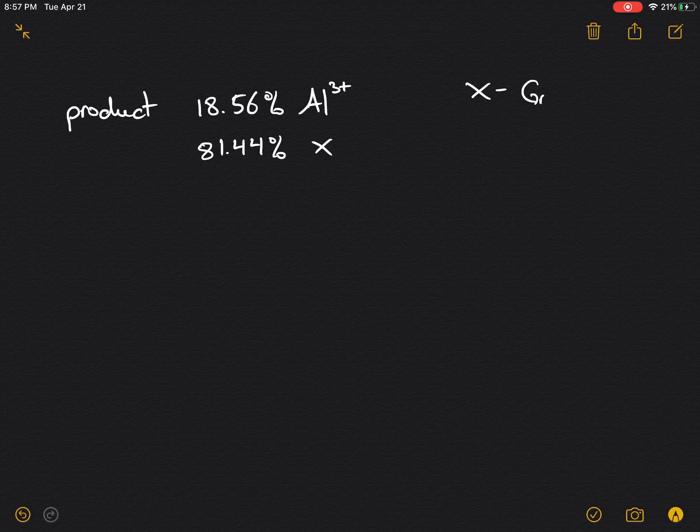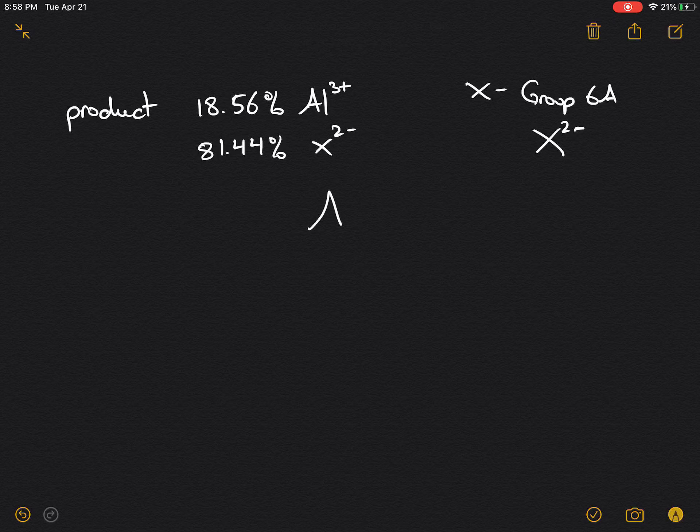We're told that element X is a Group 6A element. A Group 6A element would have a 2- charge in that group, so our formula of the ionic compound would be Al2X3. We need to find out what element X is.